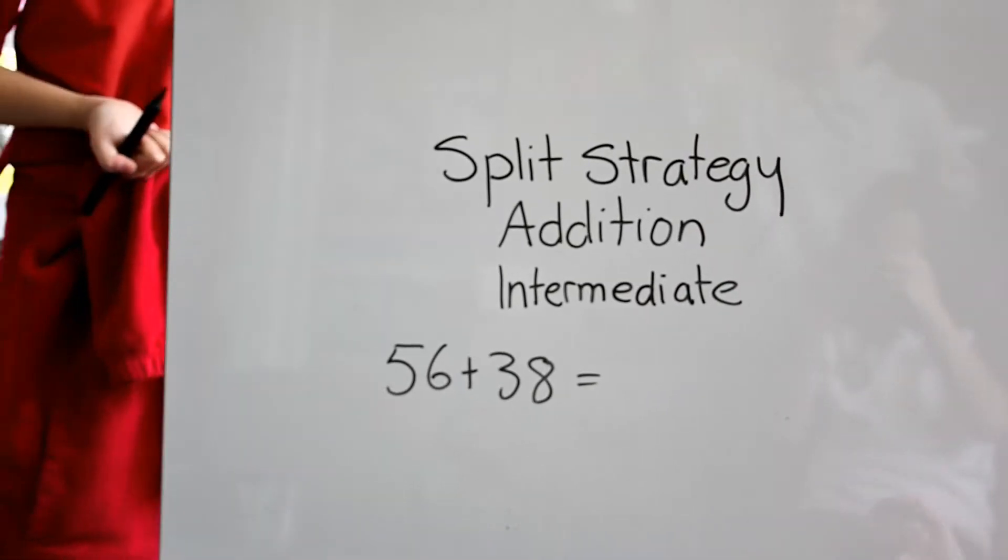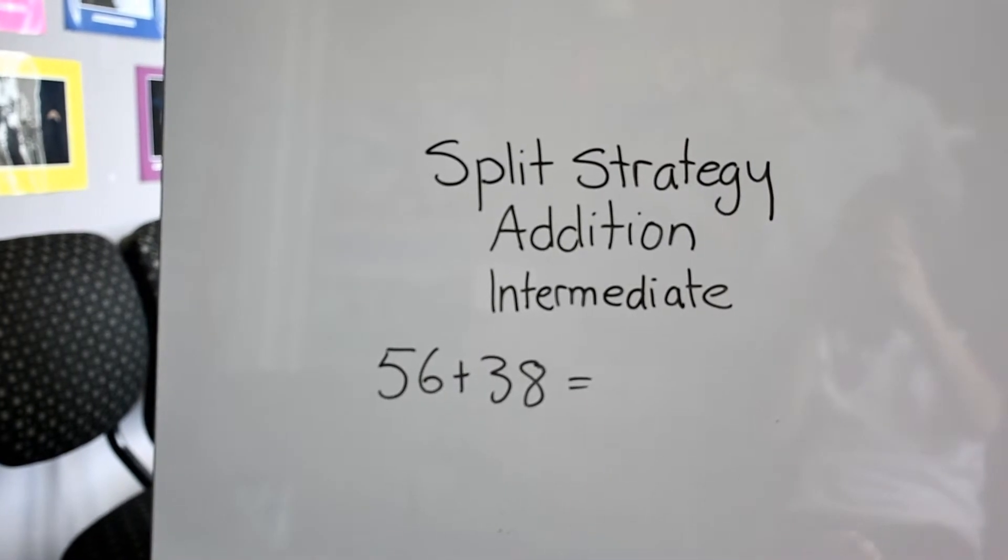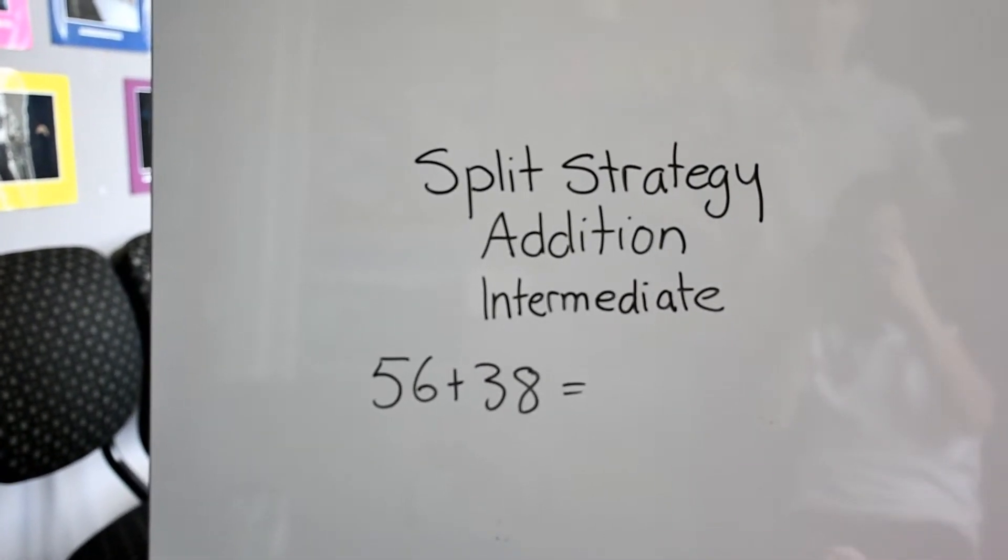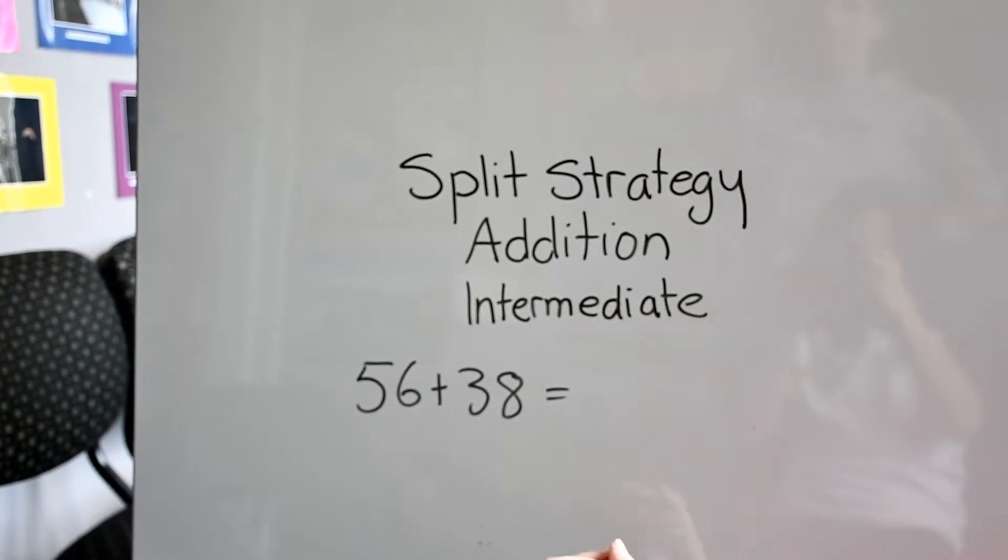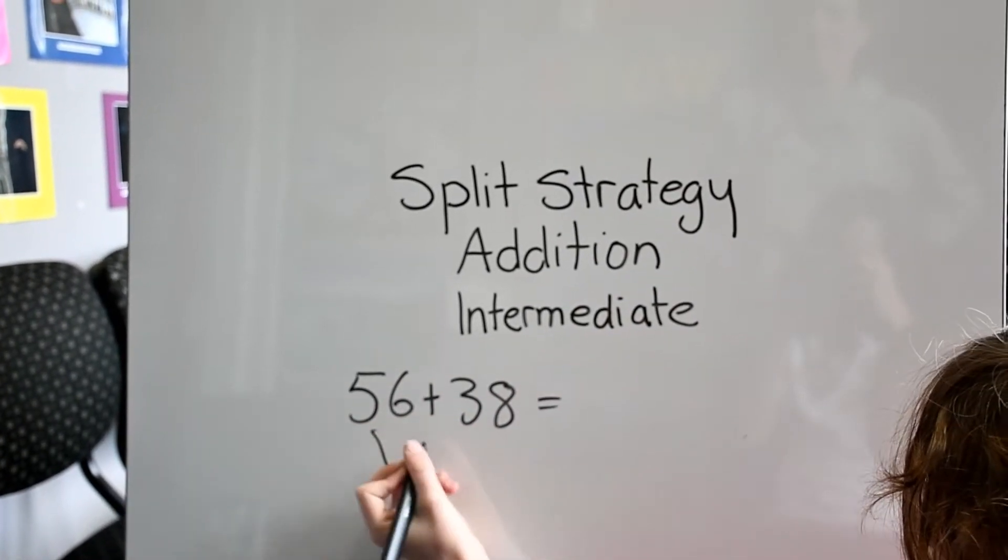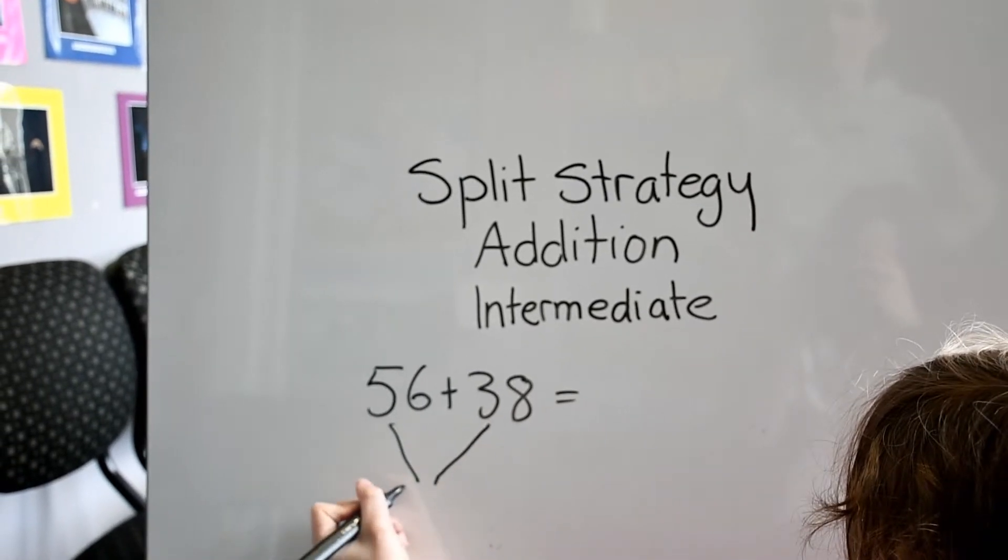This is the split strategy for addition intermediate. Our sum is 56 plus 38. We start off by getting the tens. This equals 80.